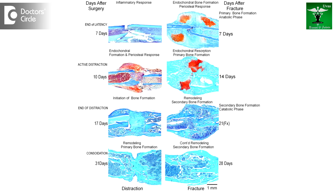Any break in the continuity of a bone is called a fracture, and the process of fracture healing starts immediately as soon as the bone fractures. There are three phases of fracture healing: the phase of inflammation, the reparative phase, and the phase of remodeling.